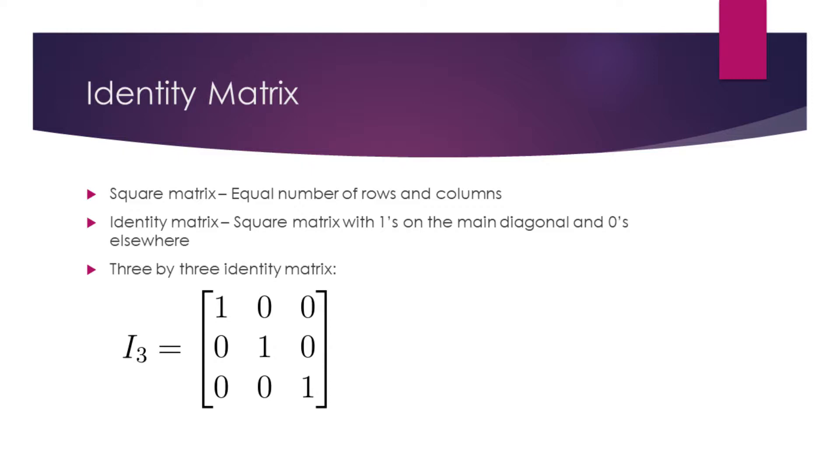Identity matrix is a square matrix that has 1's on the main diagonal and 0's elsewhere. You can see the example of a 3 by 3 identity matrix on this slide.